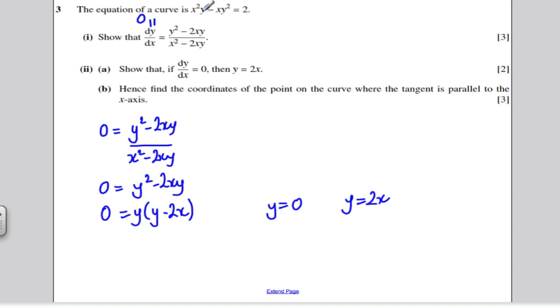Now, y can't be 0. If you look at the original equation, if that was 0 and that was 0, this whole thing would be 0, which is not equal to 2. So, that's not one of our solutions. So, we ignore this one. And, as required, y must be equal to 2x.